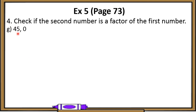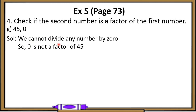Let's check part G. The numbers given are 45 and 0. Here we have to check whether 0 is a factor of 45 or not, which means we would divide 45 by 0 — but this is not possible, because we cannot divide any number by 0. So since we cannot divide any number by 0, 0 is not a factor of 45. I hope you have got this concept.